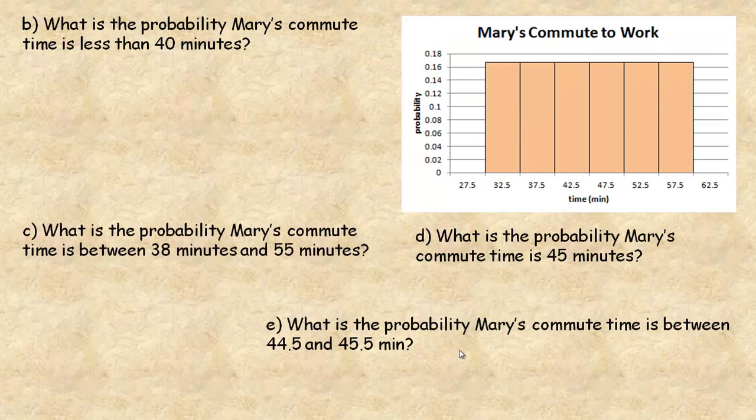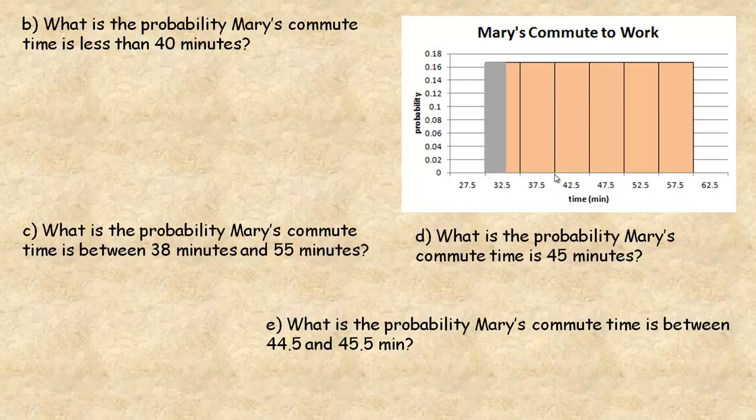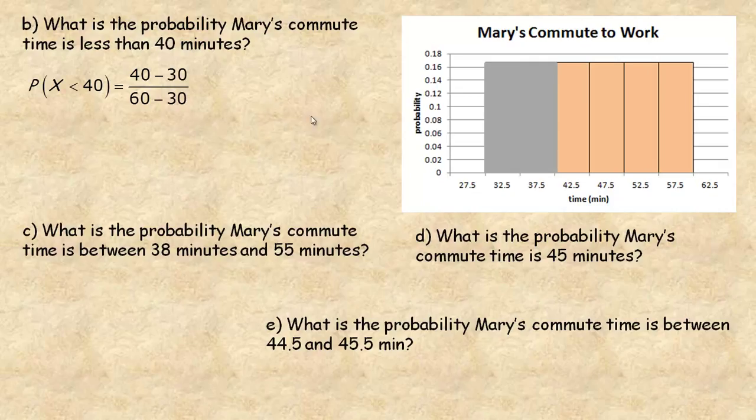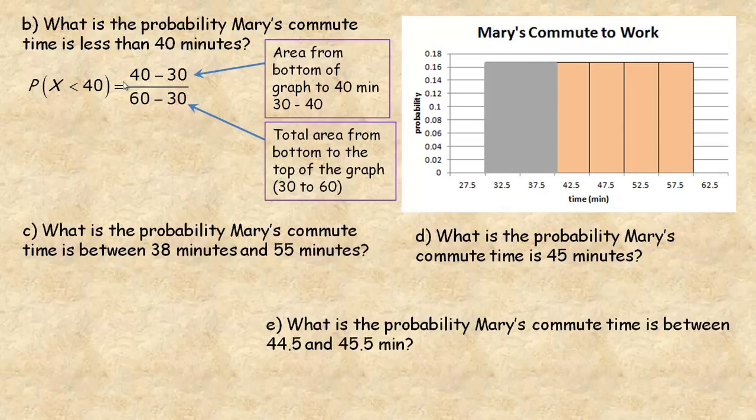We're going to calculate some probabilities on the following and last page here. B asks, what is the probability Mary's commute time is less than 40 minutes? So less than 40 minutes, so this would be 40 minutes right here. So we're talking about from there and below. So that's the 40 minutes. The way you calculate this is it's really an area calculation. And I'm going to simplify the area part in a moment here. I'll put both of these up. So the top represents the area that we're talking about between the 30 and 40 minutes, the area under the curve here, or line, I suppose. So it's the area from the bottom of the graph to the 40 minutes we're trying to find, which is the 40 minus 30.